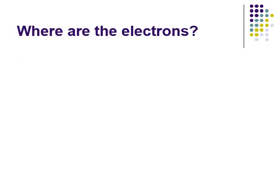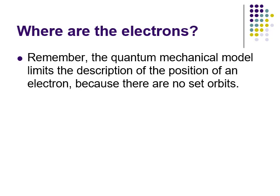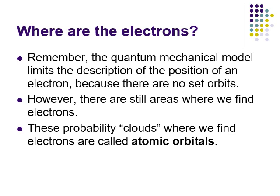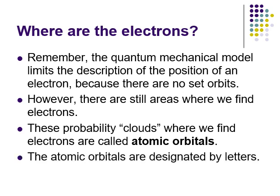There's no set orbit anymore. Instead, we have regions of probability for finding an electron, which we call orbitals — not orbits, orbitals. These orbitals make up the sub-levels. Orbitals are designated by letters, and each type comes in a different set amount: one type comes in sets of one, another in sets of three, and so on.